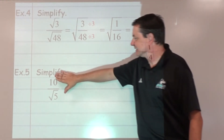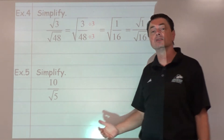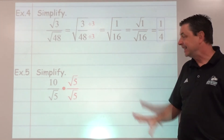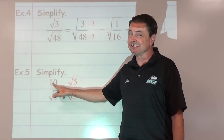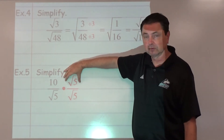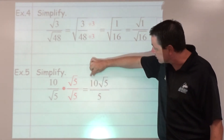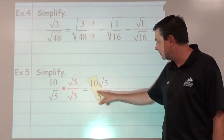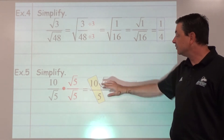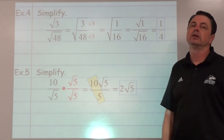Example number 5. No root on top, root on the bottom — we have a problem with the square root on the bottom. It's ready to fix right away. Let's multiply top and bottom by the square root of 5. On top, the 10 is not in a root and the 5 is in a root, so we cannot multiply those together — we keep them separate: we have a 10 and a root 5. On the bottom, the square root of 5 times the square root of 5 is 5. Because the 10 and the 5 are both outside, we can simplify: 10 divided by 5 is 2. So our final answer is 2 root 5.